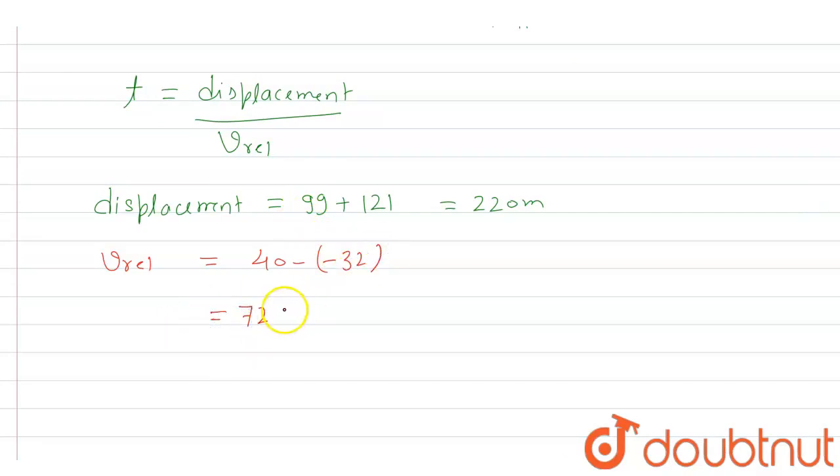So this will come out 72 kilometers per hour. When we convert this into meters per second, we have to multiply by 5/18. When we do that, we get the value as 20 meters per second. So relative velocity is 20 meters per second while the displacement was 220 meters.